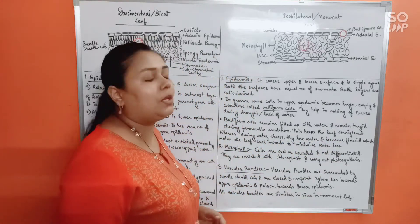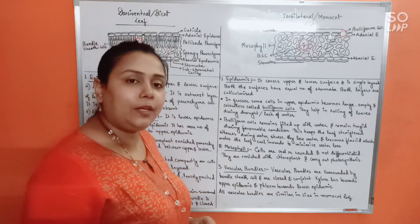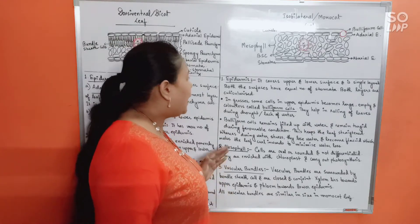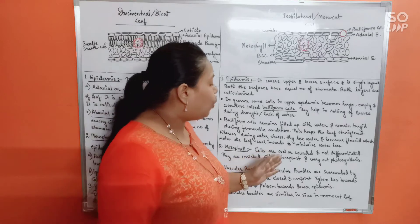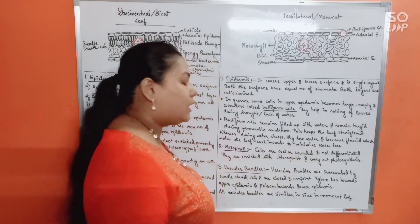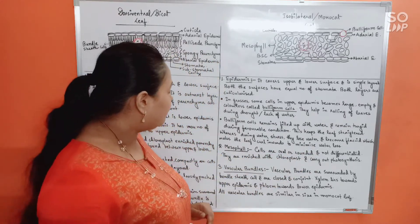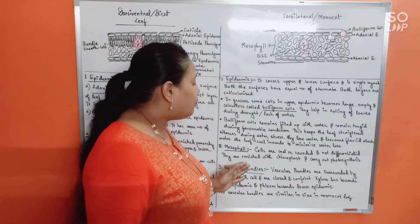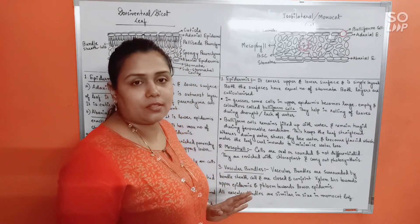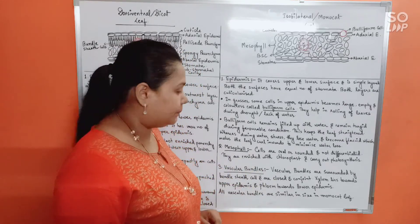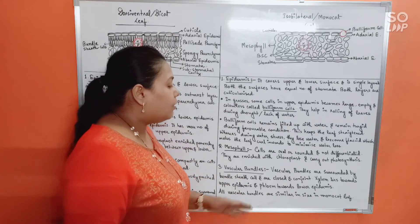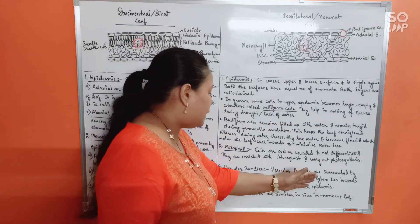Regarding mesophyll cells: they are oval and rounded and are not differentiated unlike in the dicot leaf. They are enriched with chloroplasts and carry out photosynthesis.